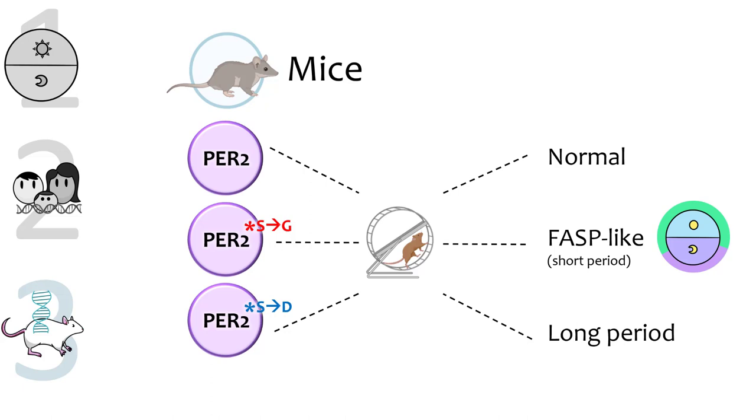The PER2 proteins in these mice were characterized by testing their levels of phosphorylation, nuclear localization, and abundance, as well as the effects on the other clock components. These experiments showed that PER2 S to G is less stable than PER2, while PER2 S to D is more stable, suggesting that phosphorylation at this site increases PER2's stability.